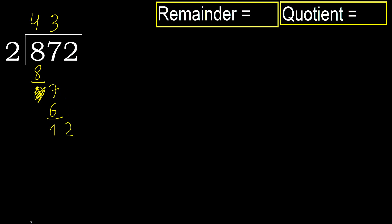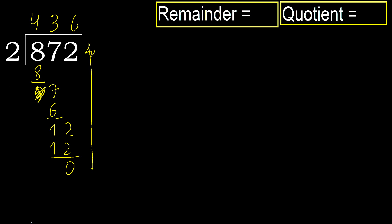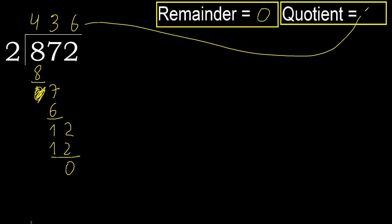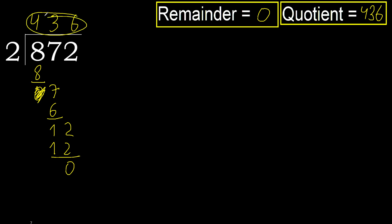Next, bring down — 12. 2 multiplied by 7 is 14, is greater. Multiply by 6 — 12 is not greater. OK, subtract. Next, there is no remainder, therefore finish. Therefore 872 divided by 2 is 436.